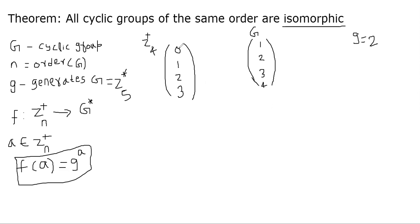So where will 0 go? 0 goes to 2 power 0, which is 1, so 0 goes to 1 always. What about 1? 1 will go to 2. What about 2? 2 will go to 2 squared, which is 4. What about 3? 3 will go to 2 power 3, which is 8. 8 mod 5 is 3, so they cross over. This is the function f that I have defined between these two groups.